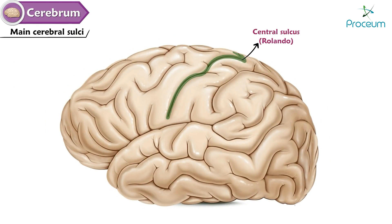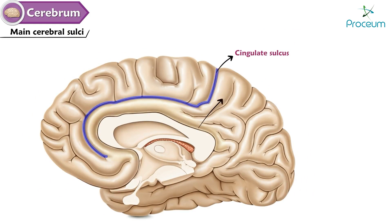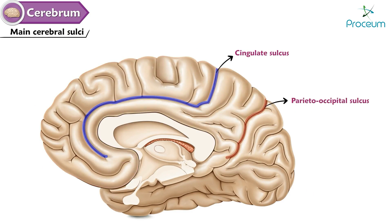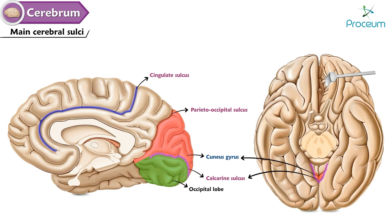The main cerebral sulci include: the central sulcus of Rolando, which separates the frontal and parietal lobes; the lateral sulcus (also known as the Sylvian fissure), which separates the frontal and temporal lobes anteriorly and the parietal and temporal lobes posteriorly; the cingulate sulcus, which separates the cingulate gyrus from the frontal and parietal lobes; the parieto-occipital sulcus, separating the parietal and occipital lobes; and the calcarine sulcus, which divides the occipital lobe horizontally into the cuneus (superior) and lingual (inferior) gyrus.